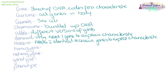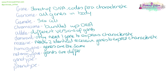Homozygous means your genes are the same. Heterozygous means your genes are different. Genotype is what genes you have. Phenotype is what characteristics you show.